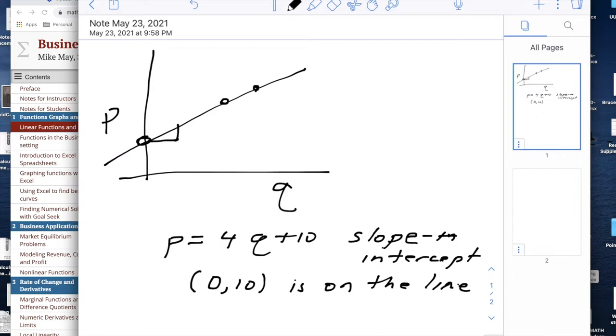(0, 10) with Q equal to 0 that's the intercept, and so if I want to easily make it point slope form I'm going to say that P equals 4 times Q minus 0 plus 10. That looks remarkably like the slope intercept form because the point we've chosen for the point slope form happens to be the intercept.